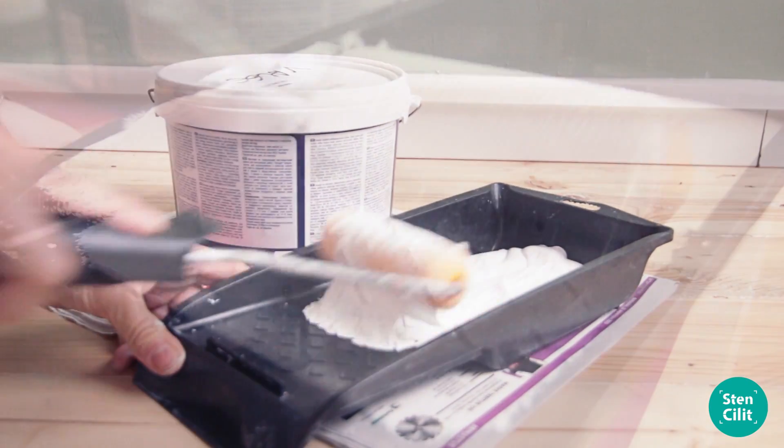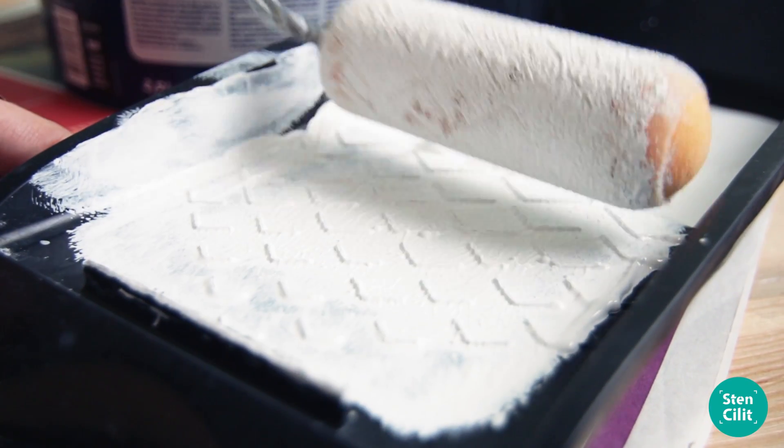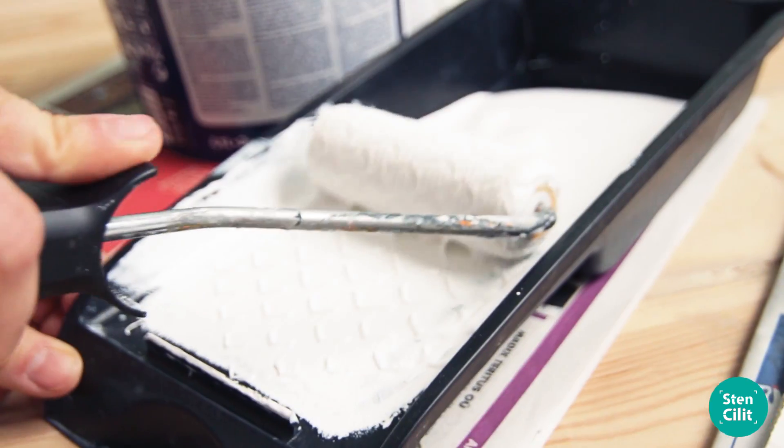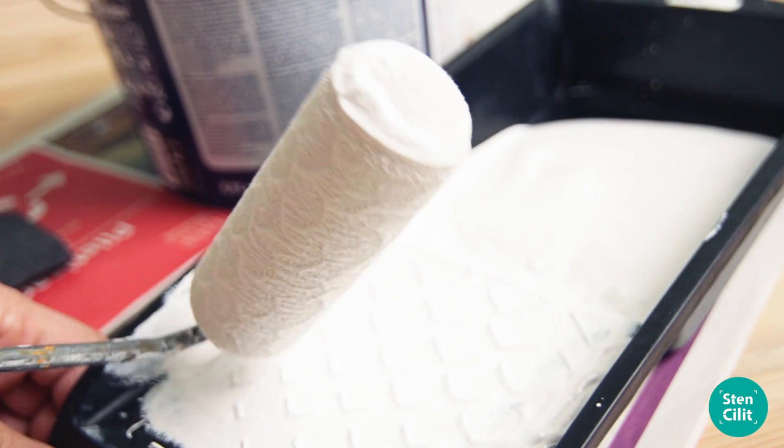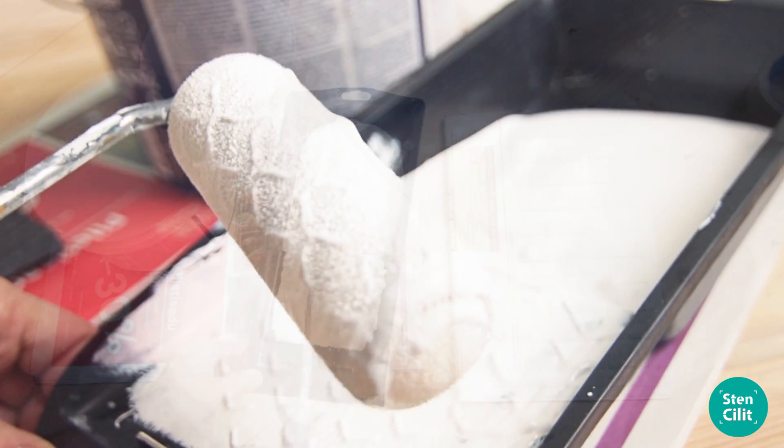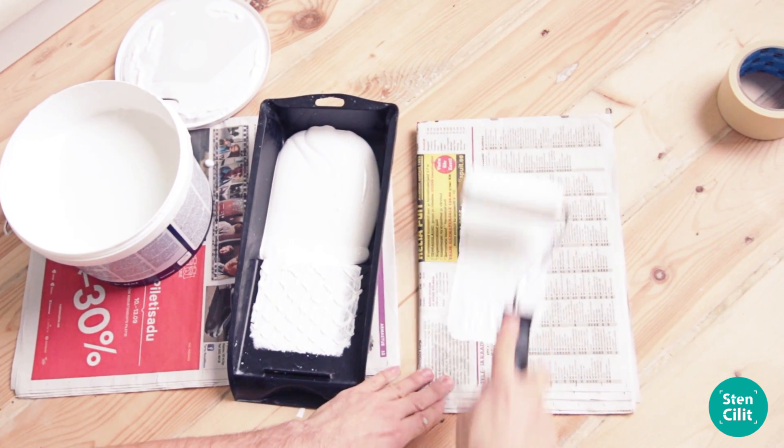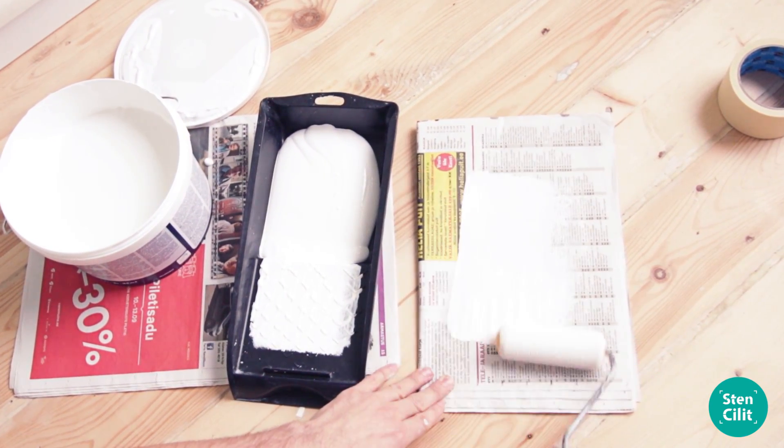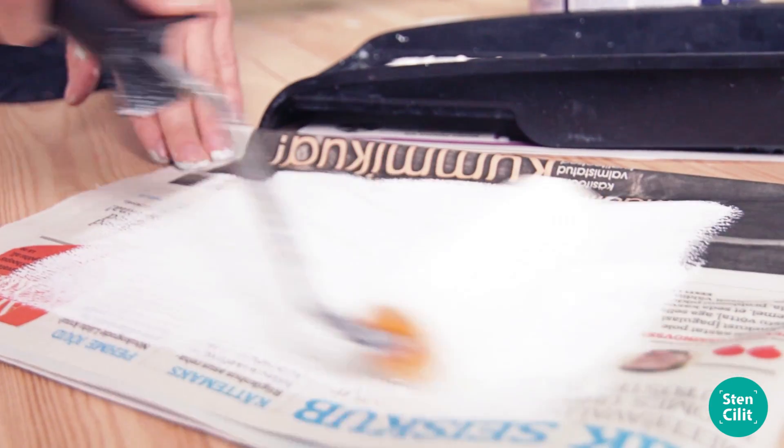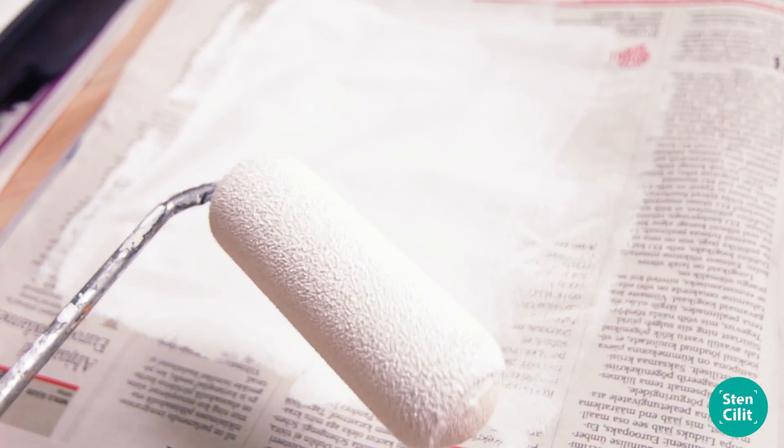Load the flocked stencil roller evenly with paint in the paint tray. Now, with a fully loaded flocked roller, don't go straight on the wall. Remove excess paint by rolling over a stack of paper towels or absorbent newspapers. This way, you are rolling the paint into the roller and away from the surface, preventing paint from seeping under.